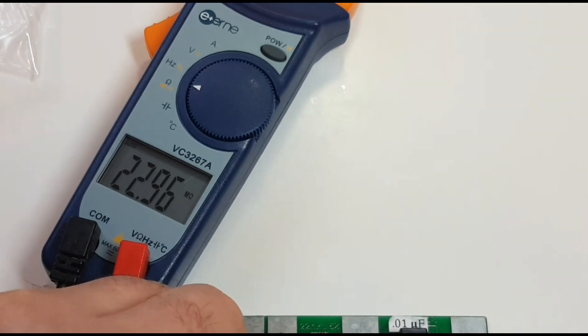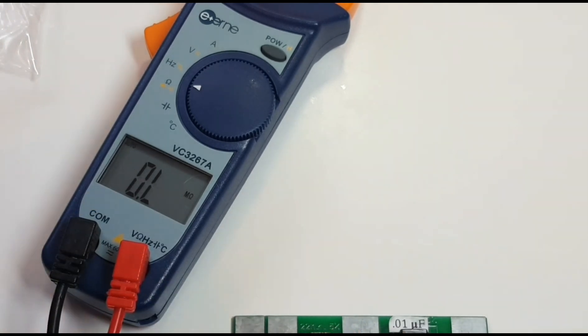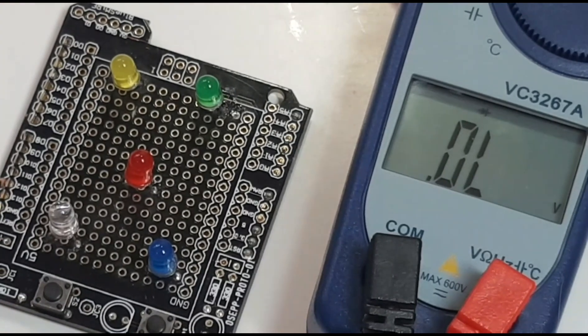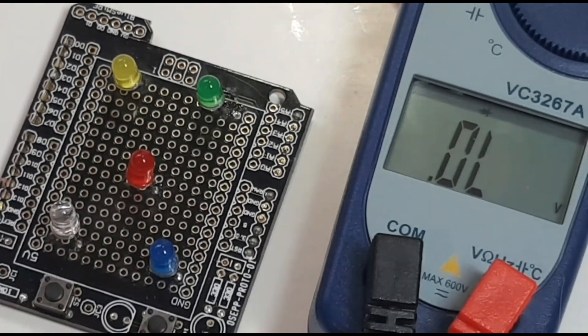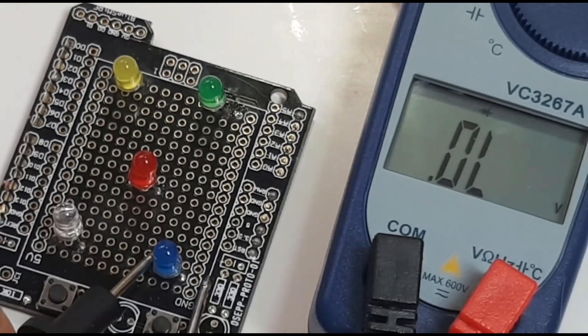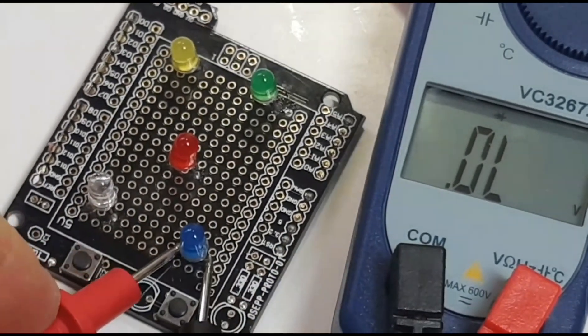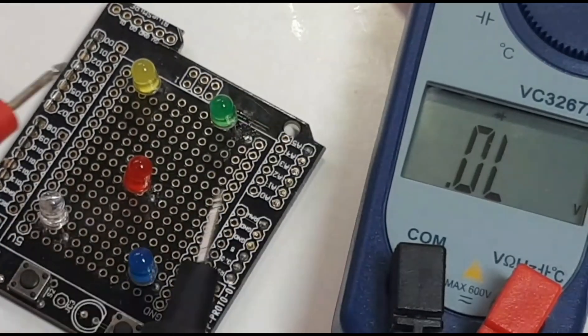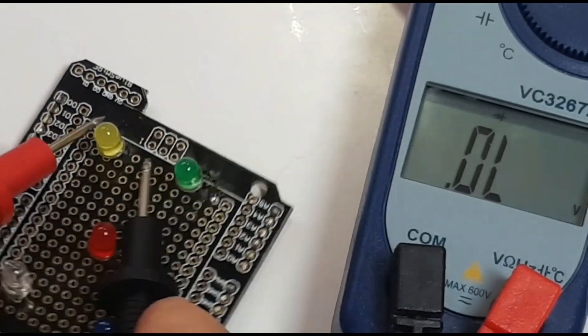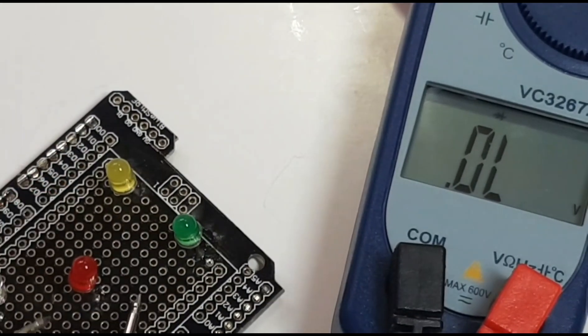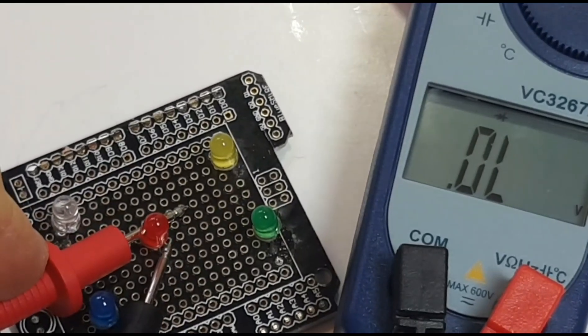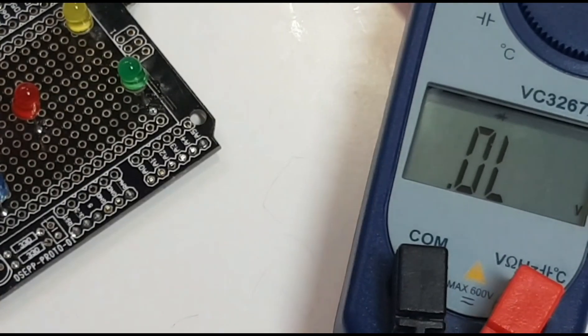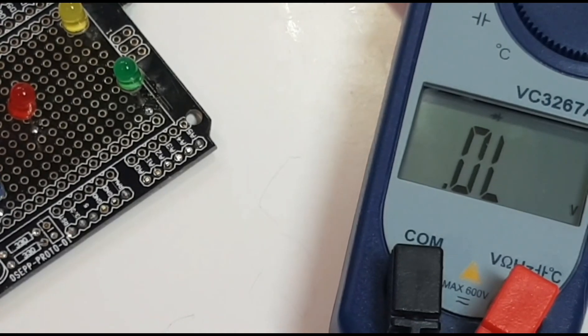Next up it's diode mode. Let's see how good or not so good the VC3267A is. Starting off the blue diode and nothing. White, nothing. Green, nada nada. And finally the red, and absolutely nothing.